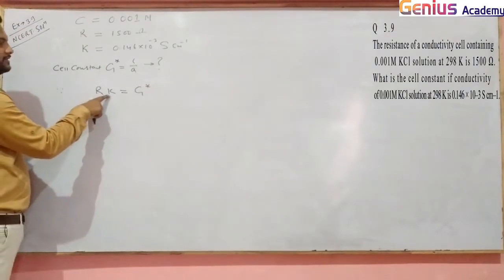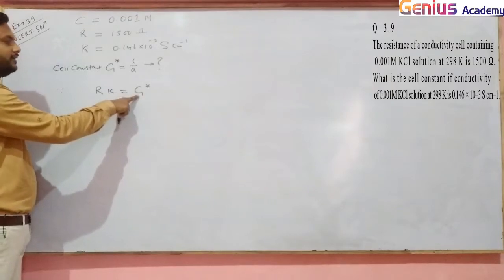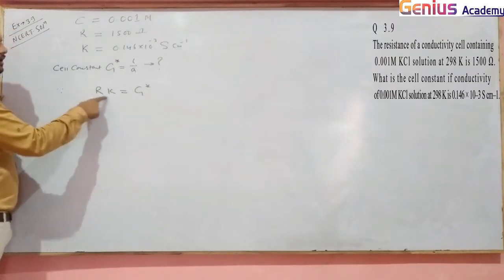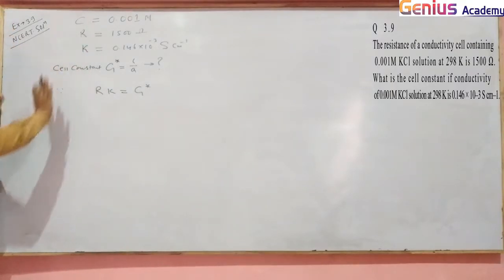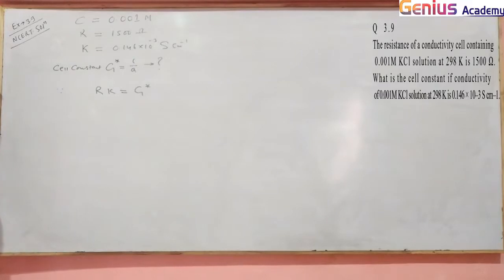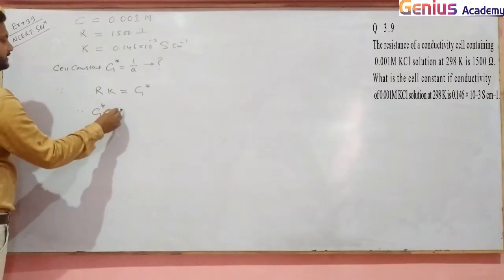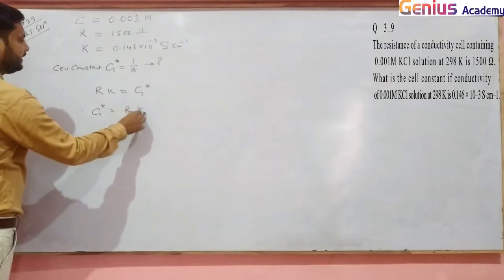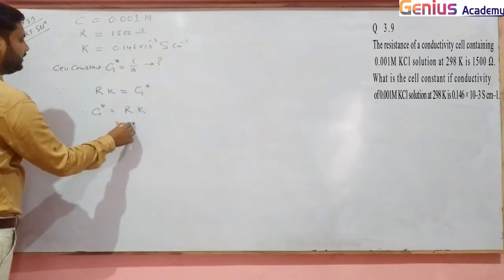R is resistance, K is conductivity, and G* is cell constant. If I multiply R and K, I get the cell constant directly - no need for concentration. Therefore, cell constant equals R × K. R value is 1500 ohm.